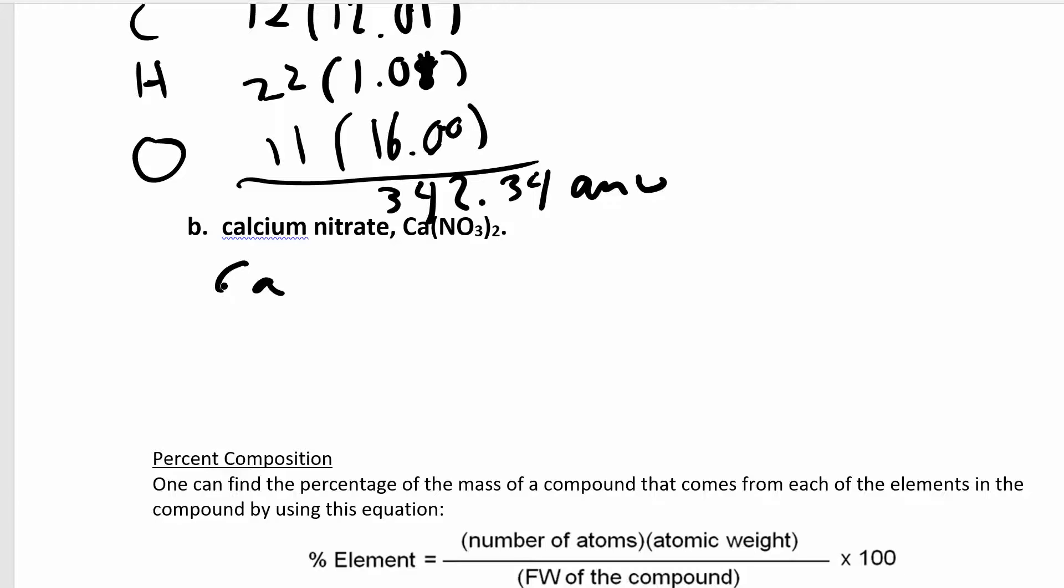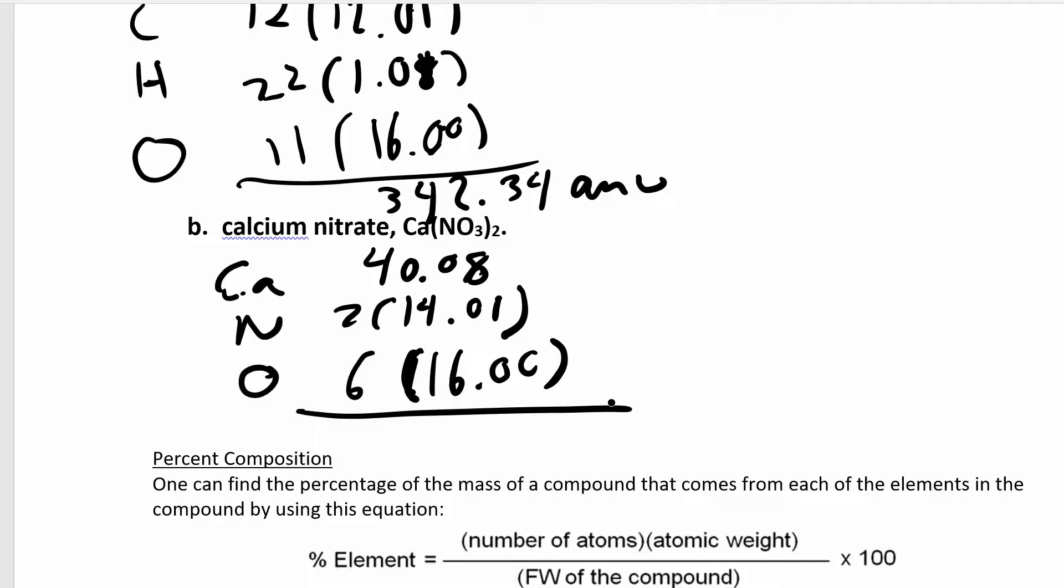You have calcium, nitrogen, and oxygen. You have 1 calcium at 40.08. You have 2 nitrogens, each one is 14.01. You have 6 oxygens, each one is 16.00. When you add all those up, 6 times 16 is 96, this is 28.02, and this one is 40.08. When you add all that up, you get 164 atomic mass units.